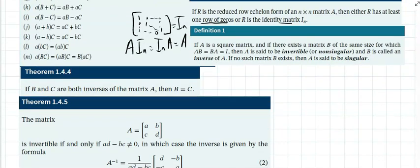Definition: if A is a square matrix — meaning the number of rows equals the number of columns — and there exists a matrix B of the same size such that AB = BA = I (the identity matrix), then A is said to be invertible or non-singular, and B is called the inverse of A.